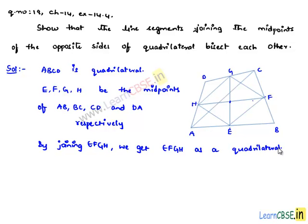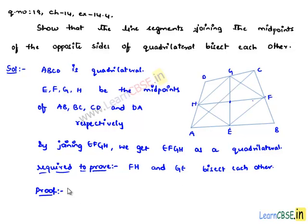Now, the lines joining E and G, and F and H will be the diagonals of EFGH. So we need to prove that FH and GE bisect each other. Now, in order to prove that, let us join AC the diagonal.